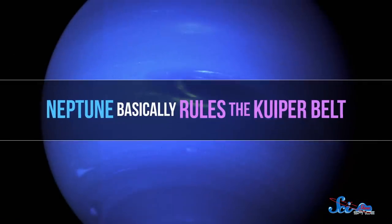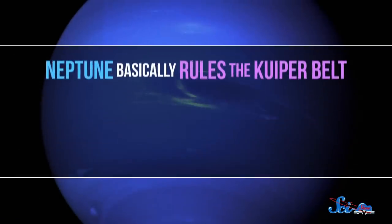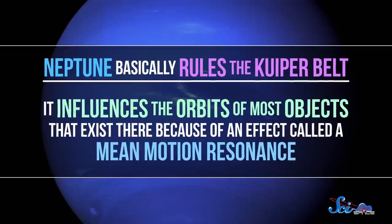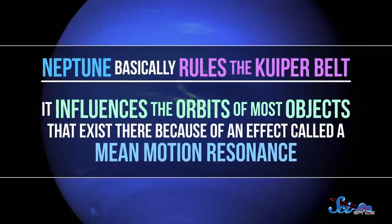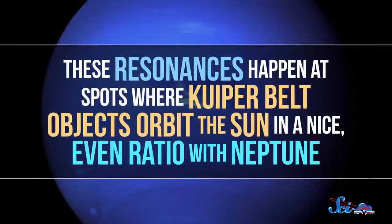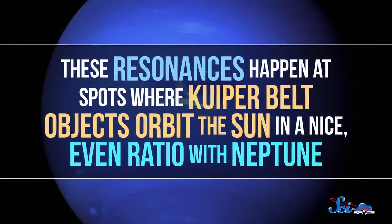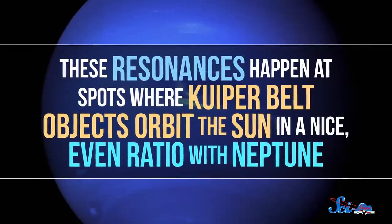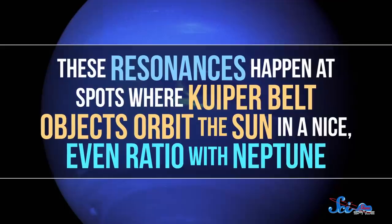The Kuiper Belt is mostly known for being full of icy objects, like comets, or for being home to Pluto. But it's actually defined by something a heck of a lot bigger: Neptune. Neptune basically rules the Kuiper Belt. It influences the orbits of most objects there because of an effect called a mean motion resonance. These resonances happen at spots where Kuiper Belt objects orbit the Sun in a nice, even ratio with Neptune.